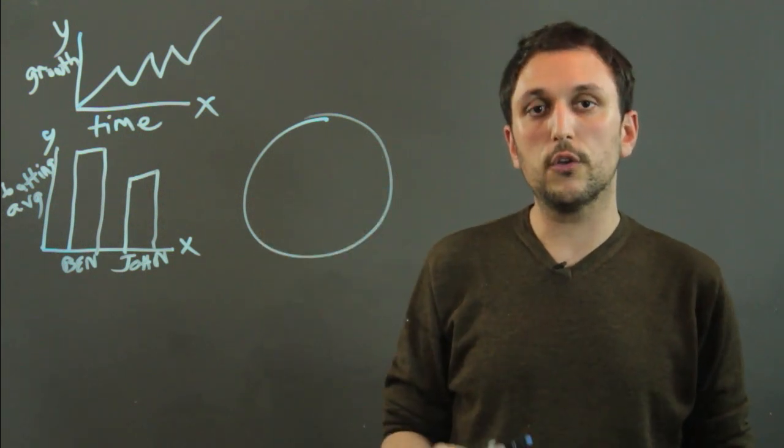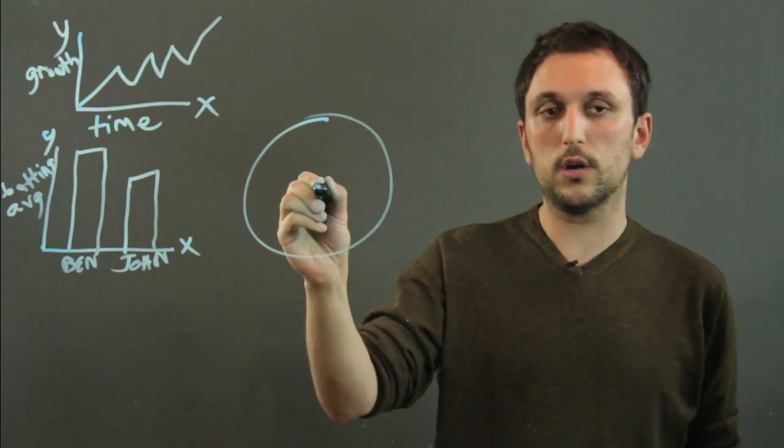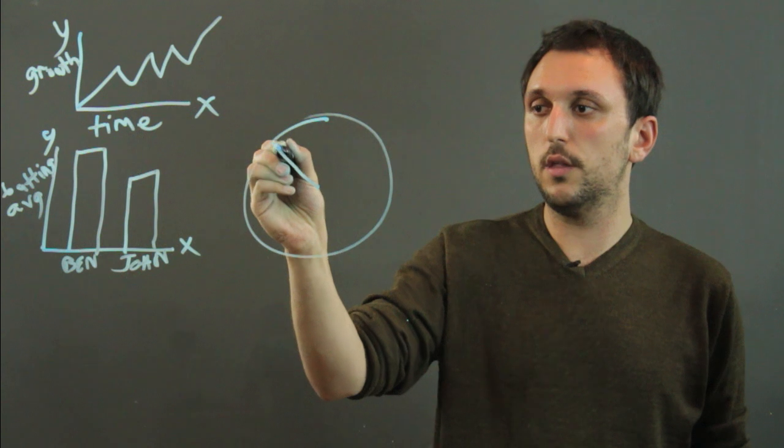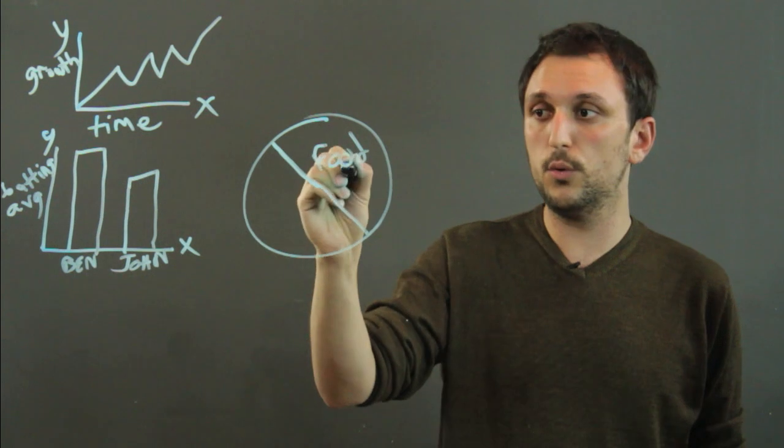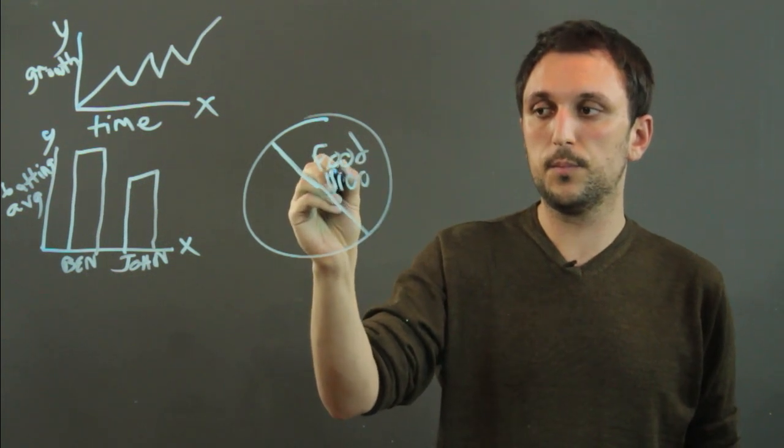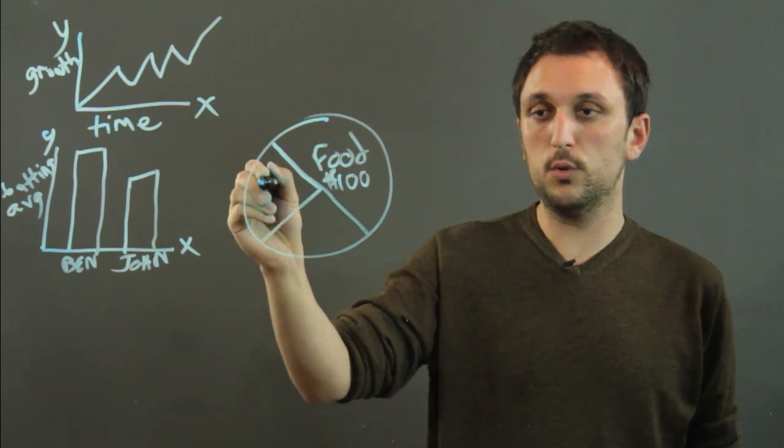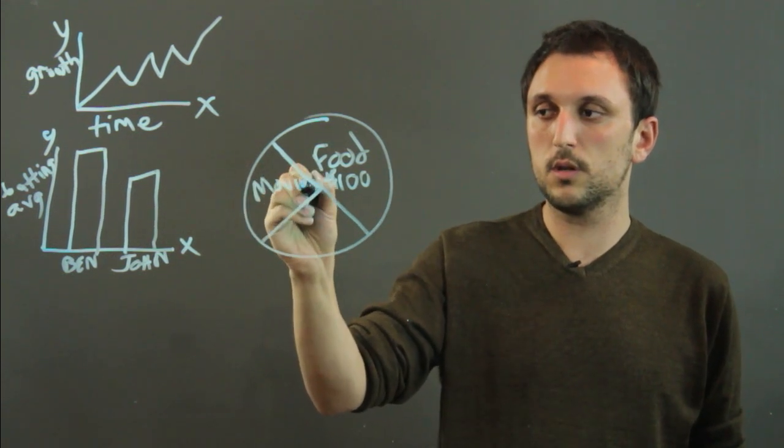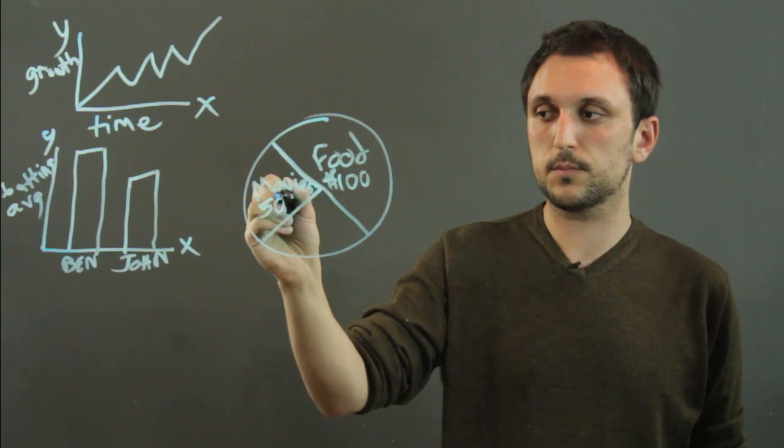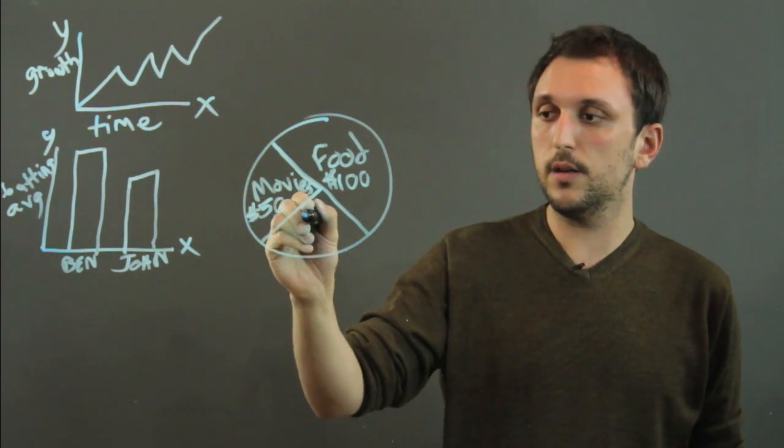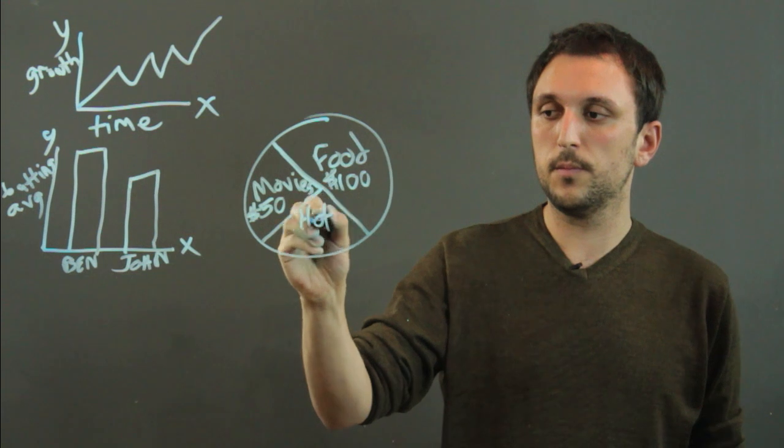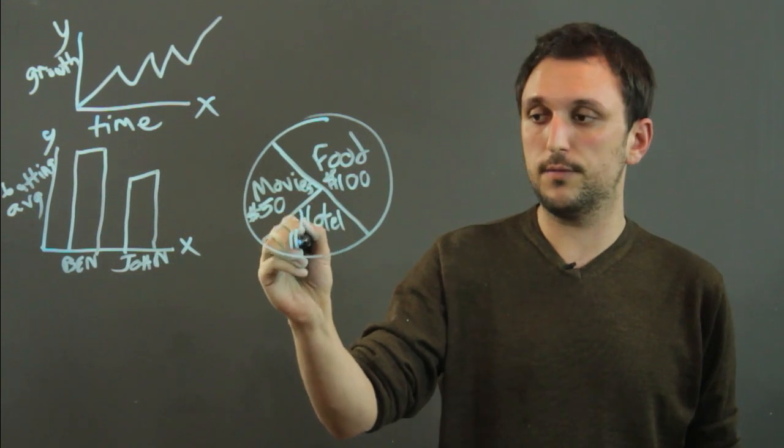For example, if you have a $200 budget and you're going to spend $100 on food, then one half of the circle is food. Then maybe movies, that's $50, 25%. And then hotel is $50, so again, 25%.